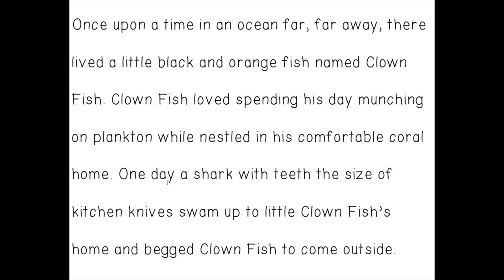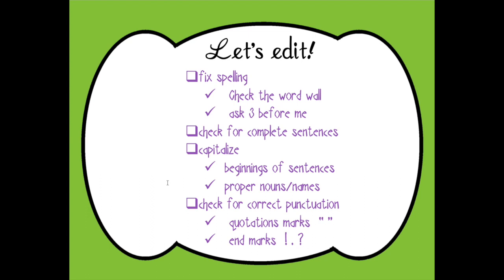So that would be my piece with some revisions. After you've revised and done those things, then I'd like you to edit. Editing is where we fix spelling, make sure the sentences are complete, add capitals where you need to — so at the beginning of sentences and the names of places or things — and check for correct punctuation. Make sure you use quotation marks when characters are speaking and then marks at the end of the sentences.